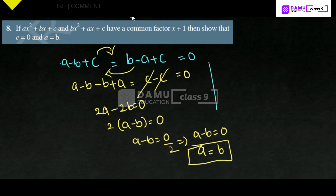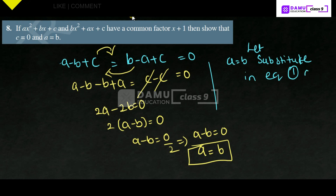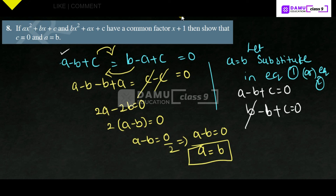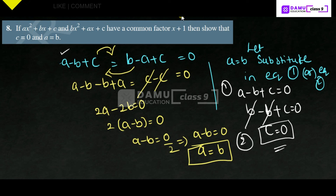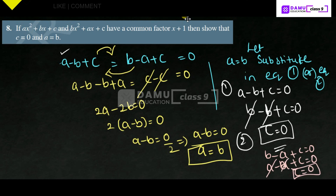Substituting a = b into equation 1: a - b + c = 0 becomes a - a + c = 0, so c = 0. We can also substitute into equation 2: b - a + c = 0 becomes a - a + c = 0, so c = 0. Like this we prove that c = 0 and a = b.